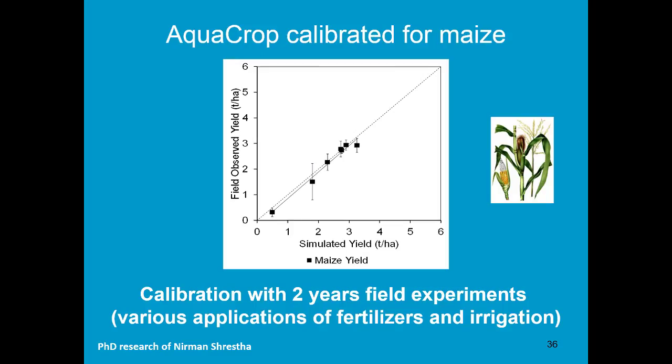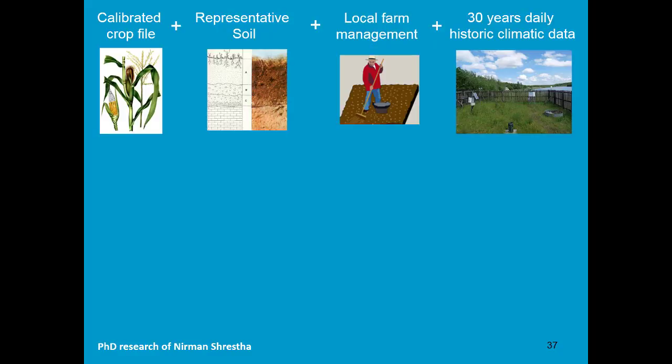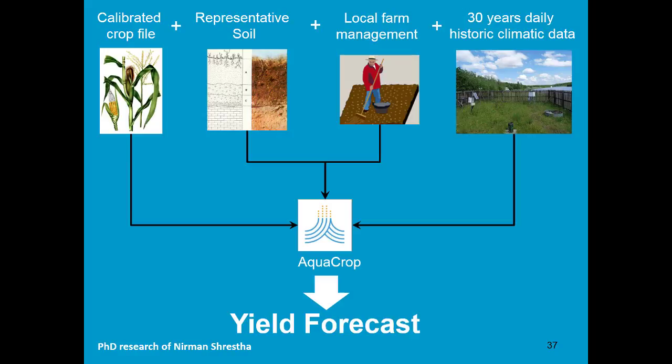The first step was to fine-tune the maize crop file to the local conditions. That was done with two years of field experimental data. Various applications of fertilizers and irrigation were considered. AquaCrop was able to simulate well the observed yield, for ranges going from only 0.5 tonne up to 3.5 tonne. With this calibrated crop file and by considering a representative soil profile and the local farm management, AquaCrop was run with 30 years of daily historical climatic data.